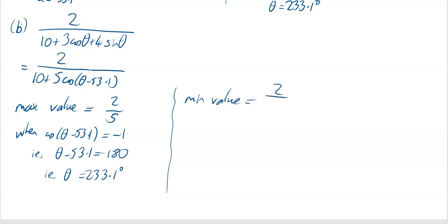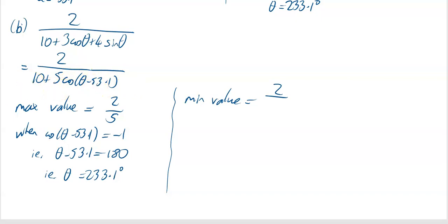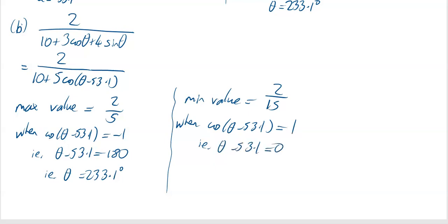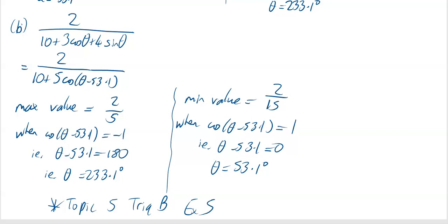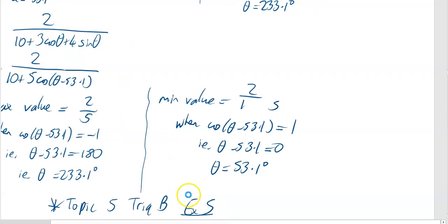For the minimum of the fraction, the denominator must be as large as possible. The biggest it can be is 10 + 5 × 1 = 15, so the minimum value is 2/15. That happens when cos(θ - 53.1°) = 1, i.e. θ - 53.1° = 0°, so θ = 53.1°. You are now ready to do the last exercise of this topic — Topic 5, Trig B section, Exercise 5.